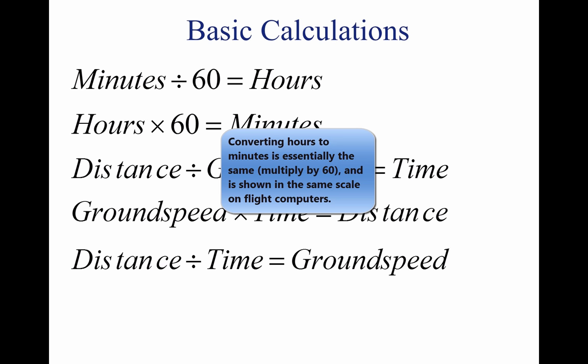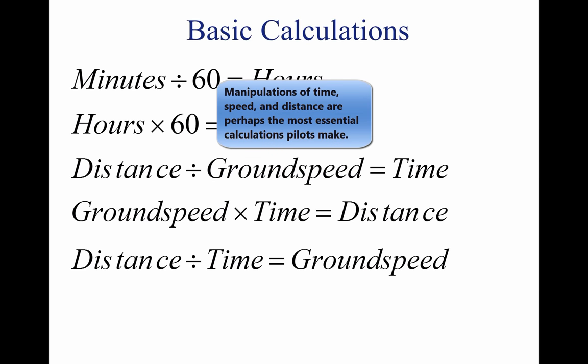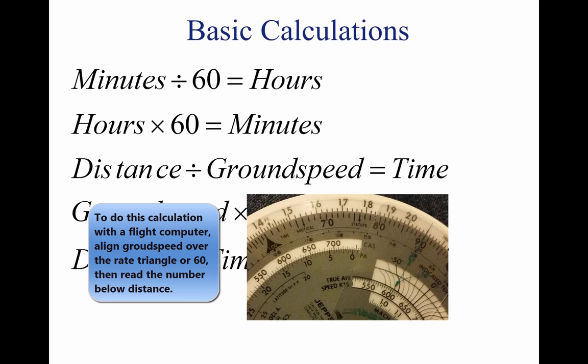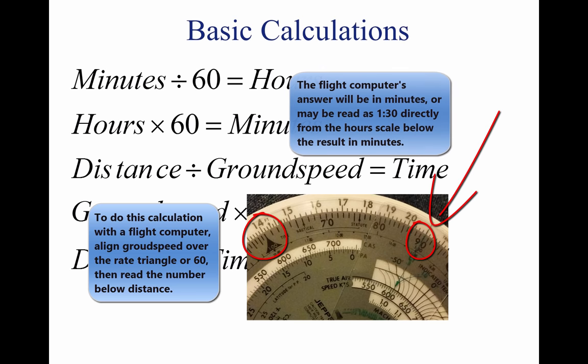Thus, .75 hour equals .75 times 60 equals 45 minutes. To find the time in flight, divide the distance by the ground speed. The time to fly 210 nautical miles at a ground speed of 140 knots is 210 divided by 140, or 1.5 hours. The .5 hour multiplied by 60 minutes equals 30 minutes.